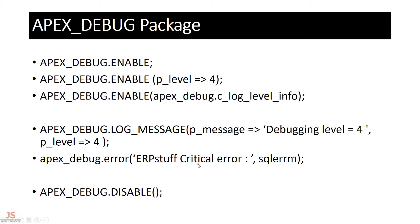There is another method: apex_debug.error, which is for critical errors. For critical errors, you don't need to enable or disable debugging — it will be printed in the log automatically. You can put this in an exception block, for example in WHEN OTHERS, and include the SQL error message. Then you disable debugging using apex_debug.disable.